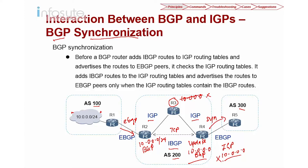If the IGP does not have the 10 network and the synchronization rule is enabled, R4 will not send this update to R5. This prevents a situation where R5 uses R4 as a transit. If the synchronization rule is not followed and R4 does advertise, R5 trying to reach the 10 network would send traffic to R4, which forwards to R3 — but R3 doesn't know where the 10 network is, so the packet is thrown away.